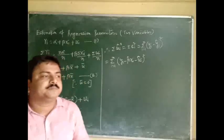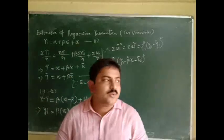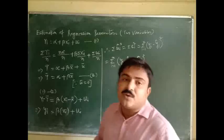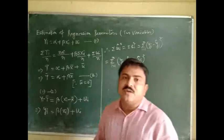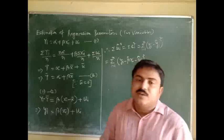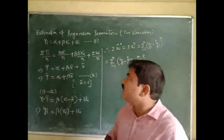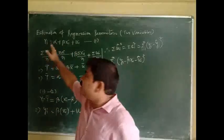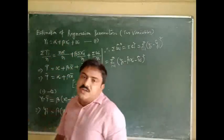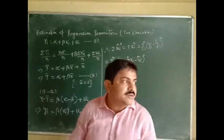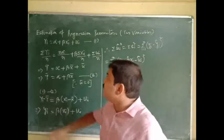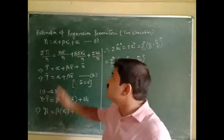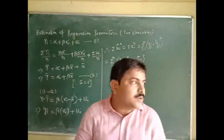Today we are going to discuss the estimation of regression parameters in case of two-variable regression lines. In that model, y is our dependent variable, x is our independent variable, and we have to estimate alpha and beta — one is our regression coefficient and one is our constant alpha.